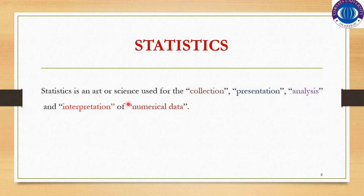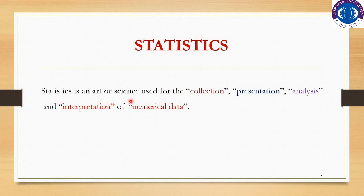These are the stages of statistics: how to collect the data, how to represent it, which tool of analysis to use to analyze the data, and what the findings of the analysis are — which we will interpret. The main focus is on numerical data, so we can find out the outcomes of our experiment.